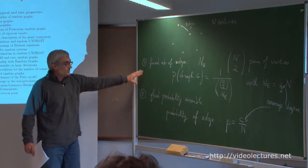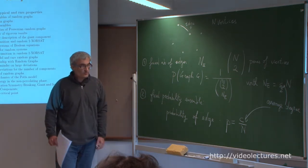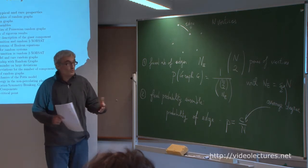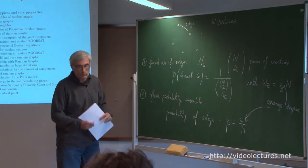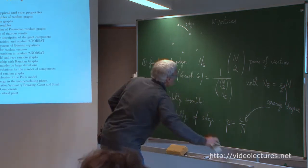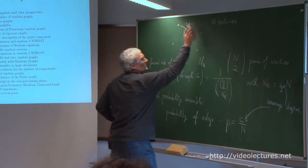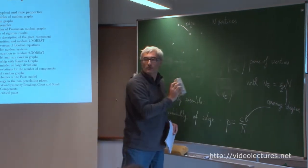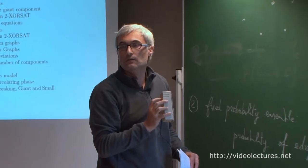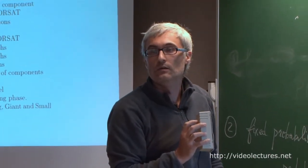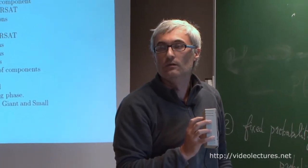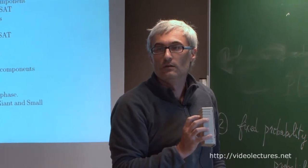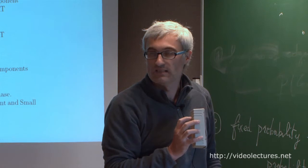One important property is the distribution of the number of degrees — the distribution of the number of neighbors. A question from the audience: in the thermodynamic limit, c remains constant because n_e and n increase at the same ratio, so p scales like 1 over n and goes to zero. This is the dilute-graph case where the average degree of a vertex is of order 1.